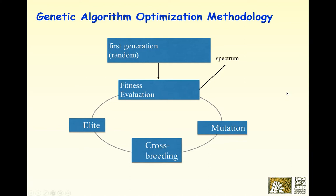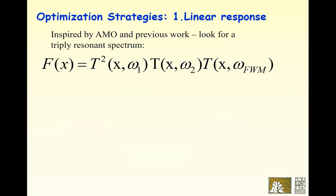The fitness function — what we're trying to optimize — is inspired by atomic and molecular optics. For a given configuration vector x, the fitness is the product of: transmission at omega-1 squared (because we take two photons at that frequency), times transmission at omega-2, times transmission at omega-4 wave mixing. This is completely based on intuition from atomic and molecular physics.